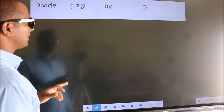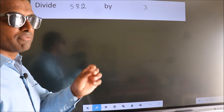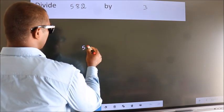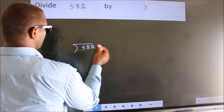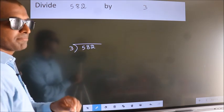Divide 582 by 3. To do this division, we should frame it in this way. 582 here, 3 here. This is your step 1.